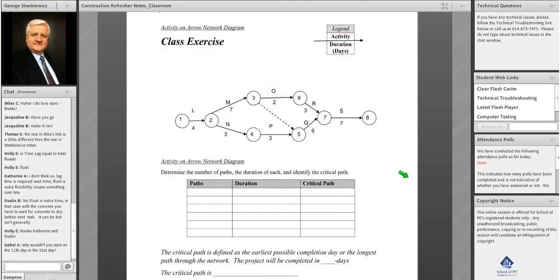The first thing you have to do whenever you look at a project schedule is determine how many paths there are, the duration of each path, and the critical path. The critical path is the longest path in the network or the earliest date that the project can finish.